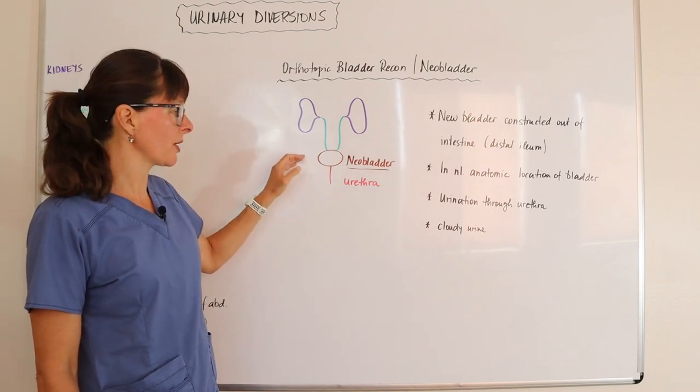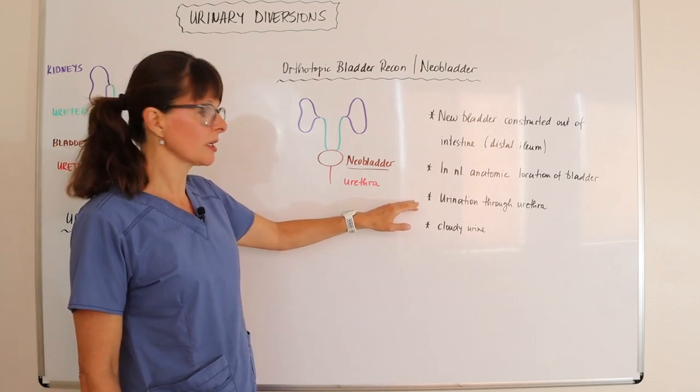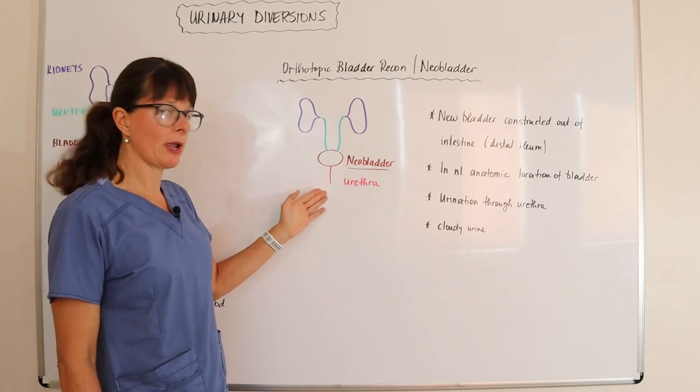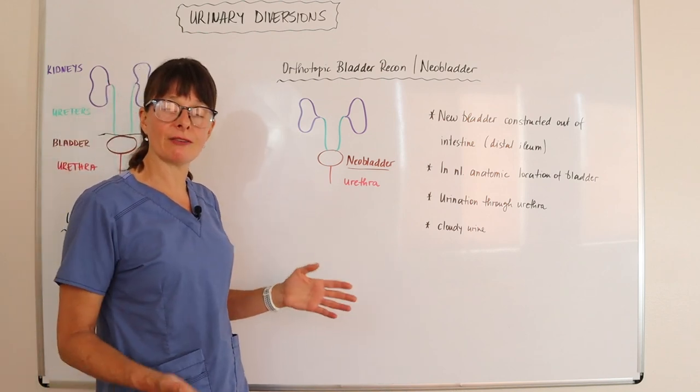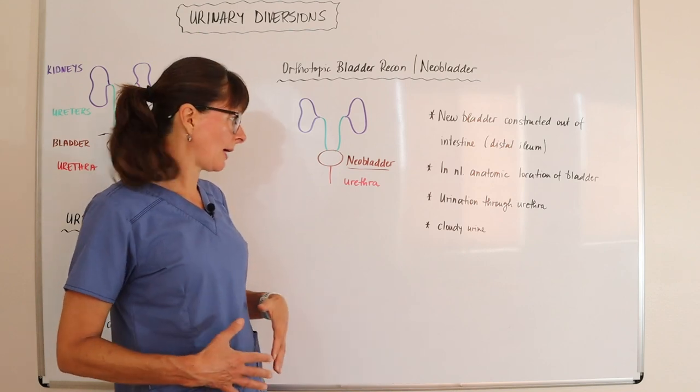As we can see here, this drawing is the same as the other one. And then the urination is preserved through the urethra. So the patient is able to void the normal way and they can avoid having any kind of urostomy or urinary diversion or stoma in their abdomen.